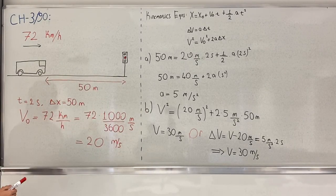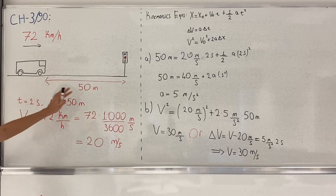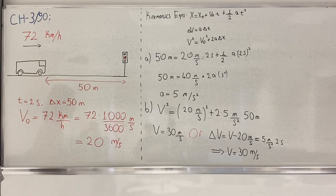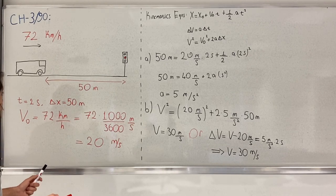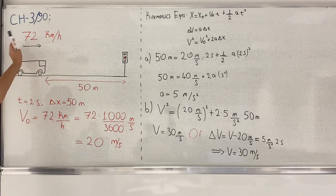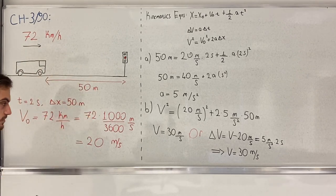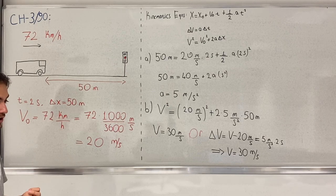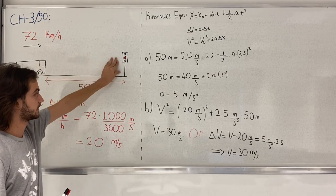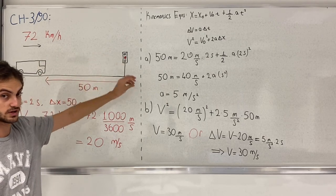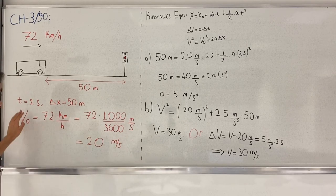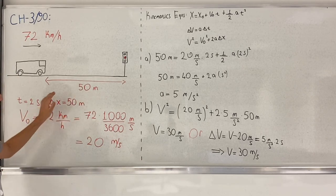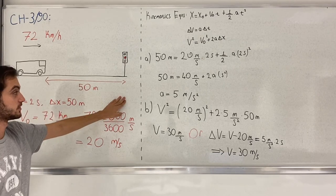In this question we are given an ambulance and a traffic light. The ambulance is rushing a patient to the hospital with a speed of 72 km per hour. We're asked to find what's required for this ambulance to reach the lights before it turns red in two seconds, and the distance between the ambulance and the traffic light is 50 meters.